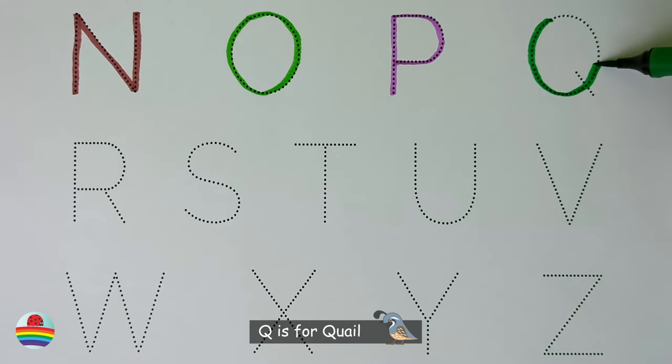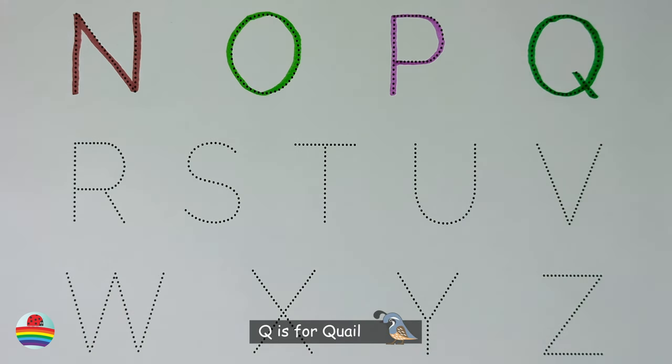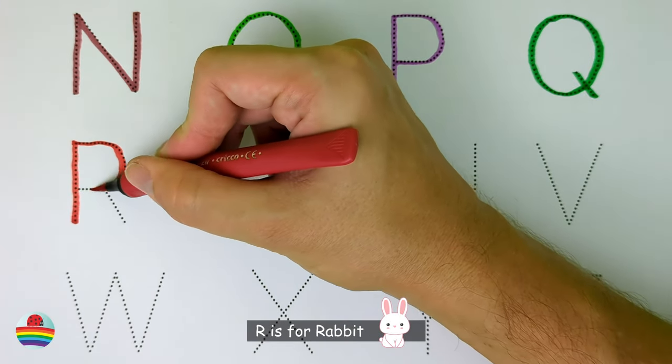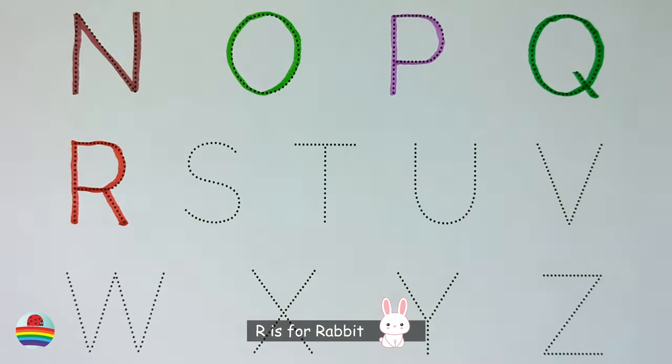Q. Q is for quail. Q. R. R is for rabbit.